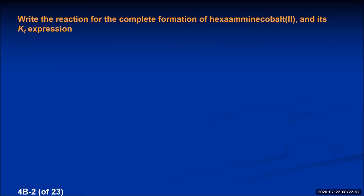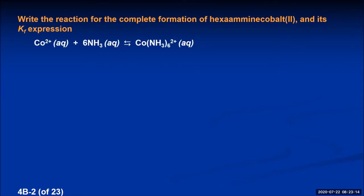Let's give you a chance to do one. Write the reaction for the complete formation of hexamine cobalt 2 and then write its Kf expression. This complex ion's formula is Co(NH3)6 with a positive two charge. The formation reaction would be the cobalt ion combining with six ammonia molecules to form Co(NH3)6 2+. The equilibrium constant expression would be the concentration of the complex ion divided by the concentration of the cobalt 2 ion multiplied by the concentration of the ammonia to the sixth power.